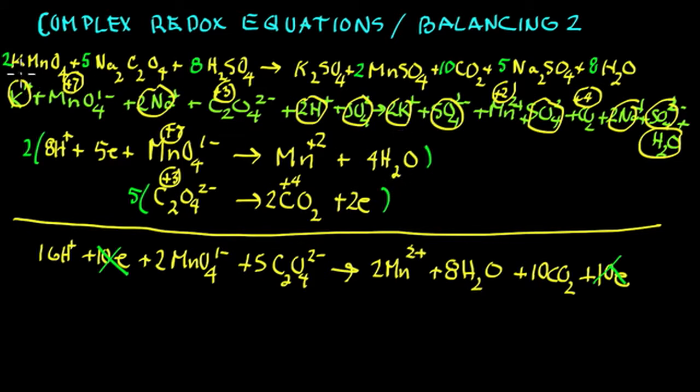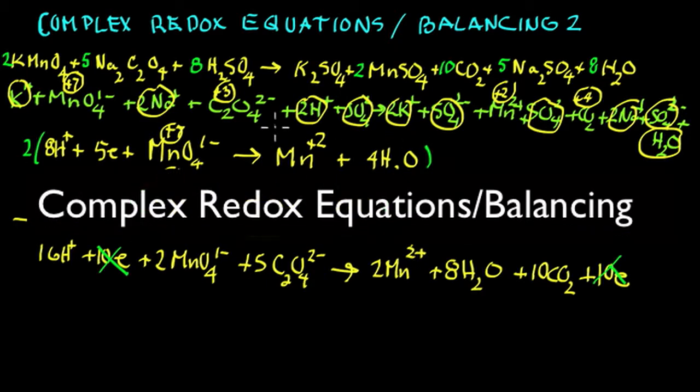And we have balanced the equation with coefficients 2, 5, 8, 1, 2, 10, 5, 8. The coefficients you can probably never get by using inspection. So we've balanced the complex equation by half reactions. And we'll stop there. You could go back and review some of the other redox equations we've done.